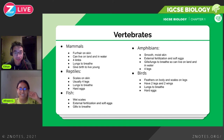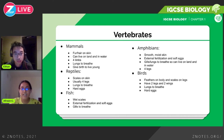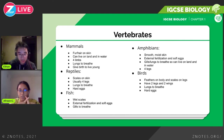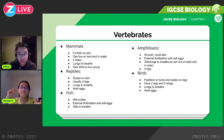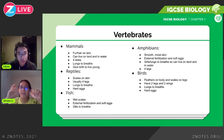Now we look at vertebrates. Mammals usually have fur, hair, or skin; can live on land or in water; have four limbs; have lungs to breathe; and give birth to live young. Reptiles have scaly skin, usually have four legs though snakes are an exception, have lungs to breathe, and lay hard eggs.